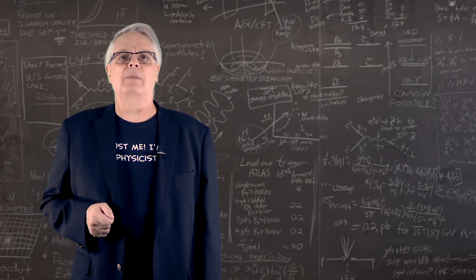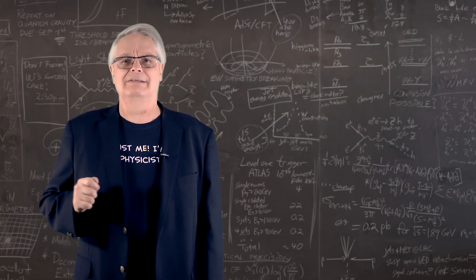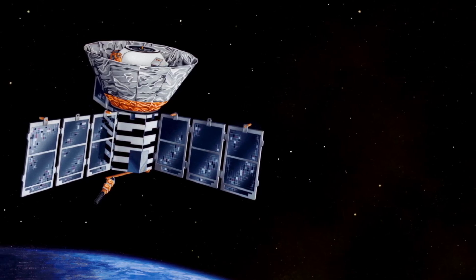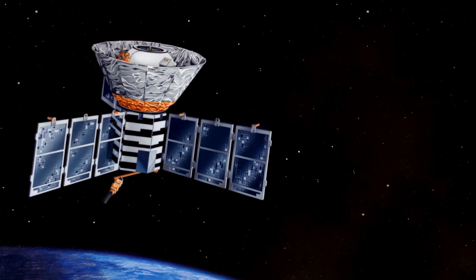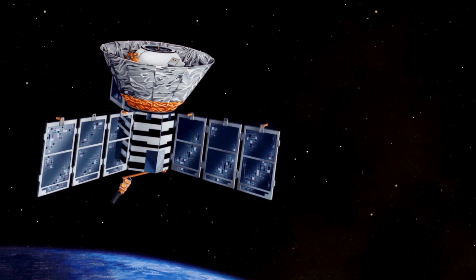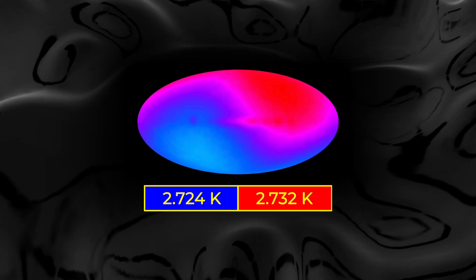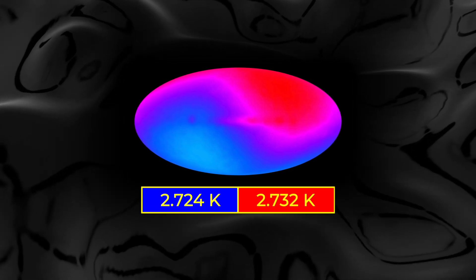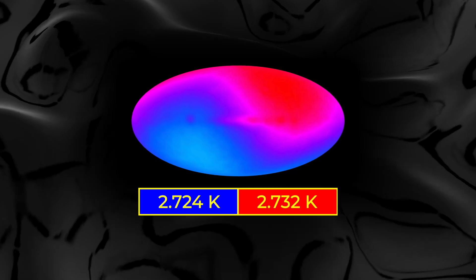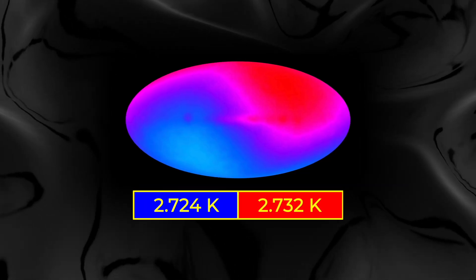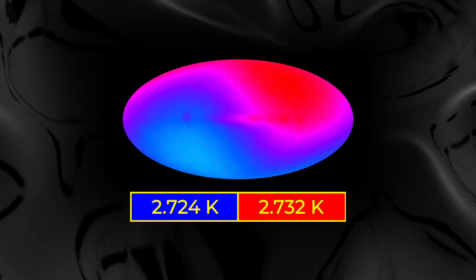The measurement was made much more precisely in 1998 when a satellite called the Cosmic Background Explorer, or COBE, looked for tiny variations in the CMB. When researchers looked at the data, they saw that half of the sky was a little hotter than the other, with one side being 2.724 and the other side being 2.732 Kelvin. What's that all about?